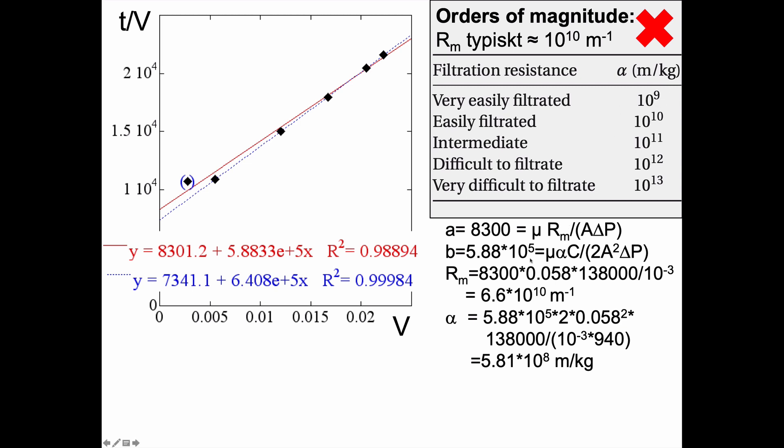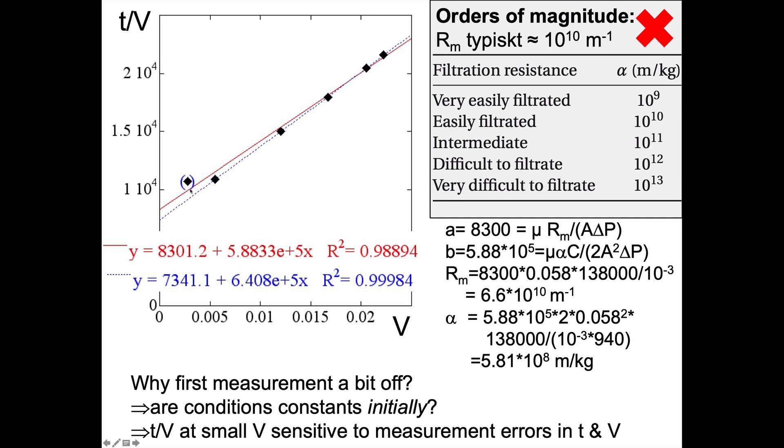Well, one question is are the conditions constant initially? Because we start with a pure filter, not a cake on it, right? So in the beginning it might happen that things get through that shouldn't get through, and once we've built up a cake we have a better filtration process. So the first data point might actually be off for that reason.